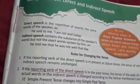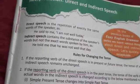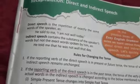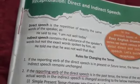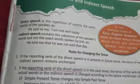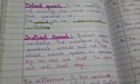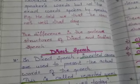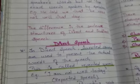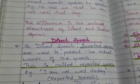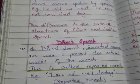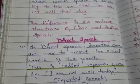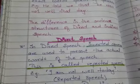In direct speech, inverted commas are used to present the actual words of the speaker. The difference in the sentence structures of direct and indirect speech: in indirect speech, inverted commas are used to present the actual words of the speech. This is called reported speech — इसको हम reported speech कहते हैं।